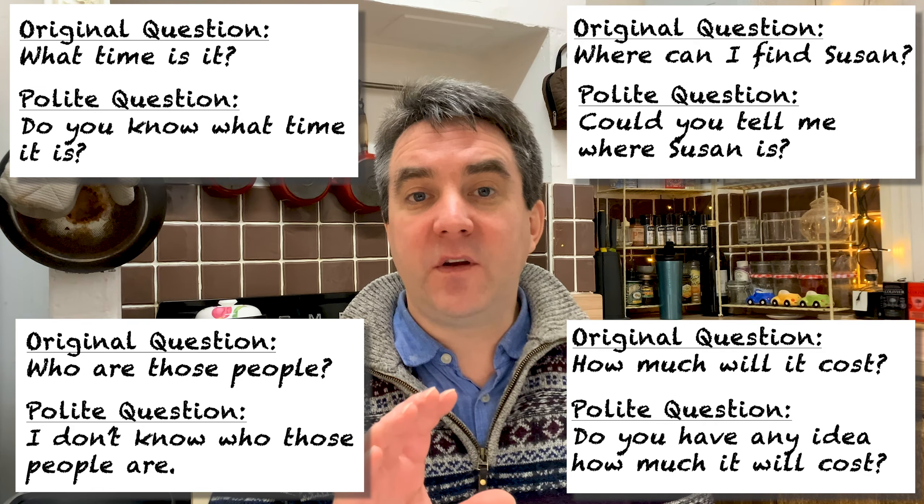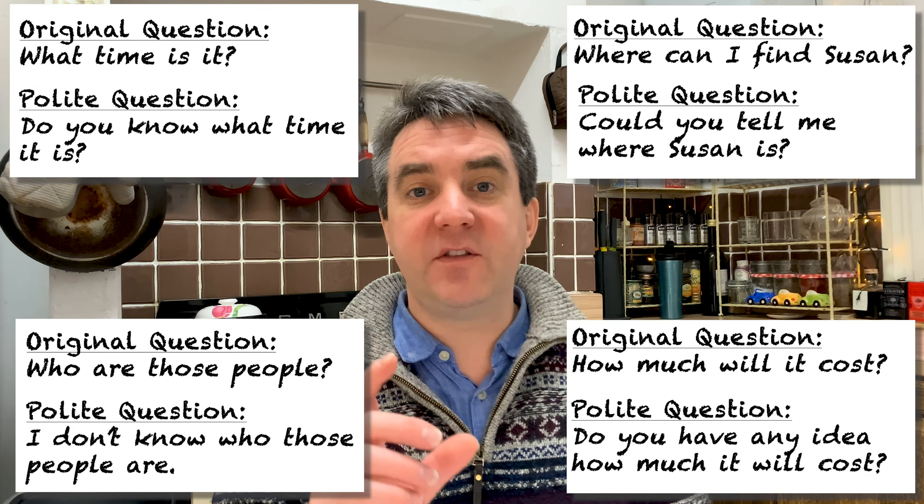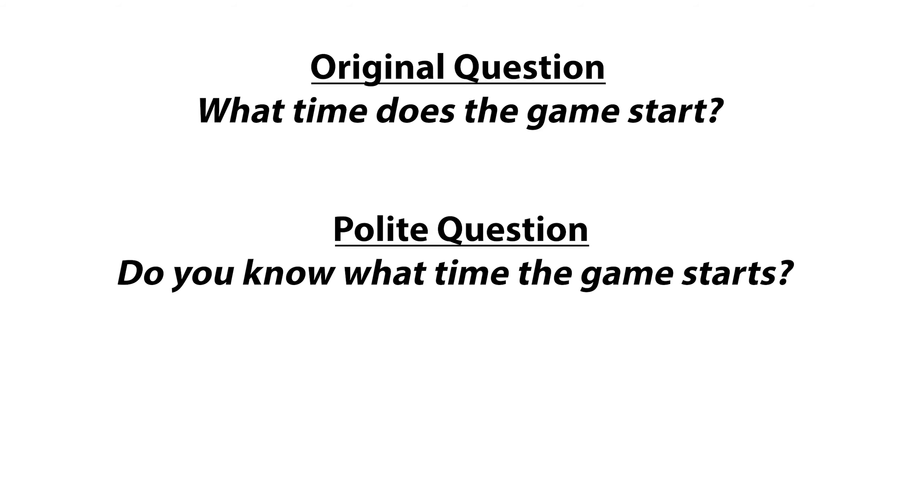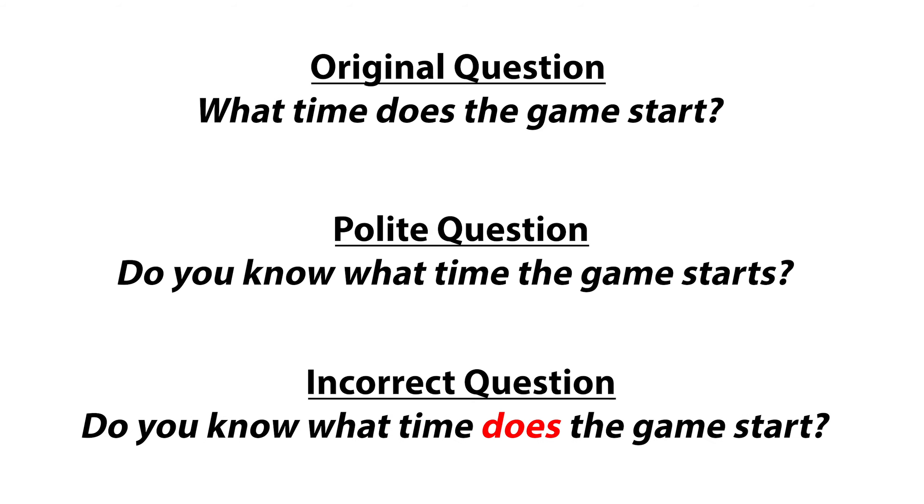The important thing to notice here is that the auxiliary verb and the subject switch over when using these phrases. You need to be careful with questions that include 'do', 'does', or 'did'. Have a look at the following examples and the changes that could occur. The first example: 'What time does the game start?' This changes to 'Do you know what time the game starts?' — not 'Do you know what time does the game start?' So the 'does' is removed in the phrase.